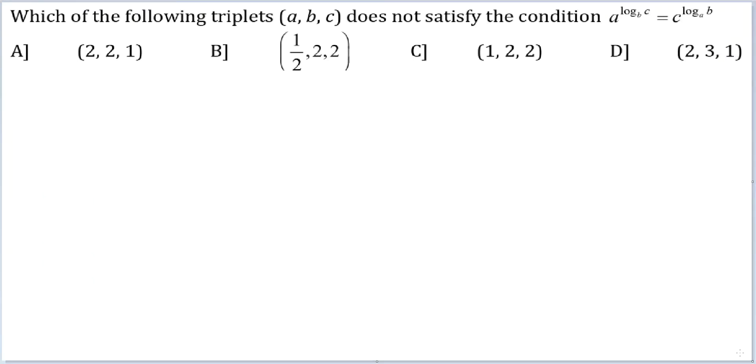Let's look at this question. Which of the following triplets (a, b, c) does not satisfy the condition a raised to the power log base b of c is equal to c raised to the power log base a of b?